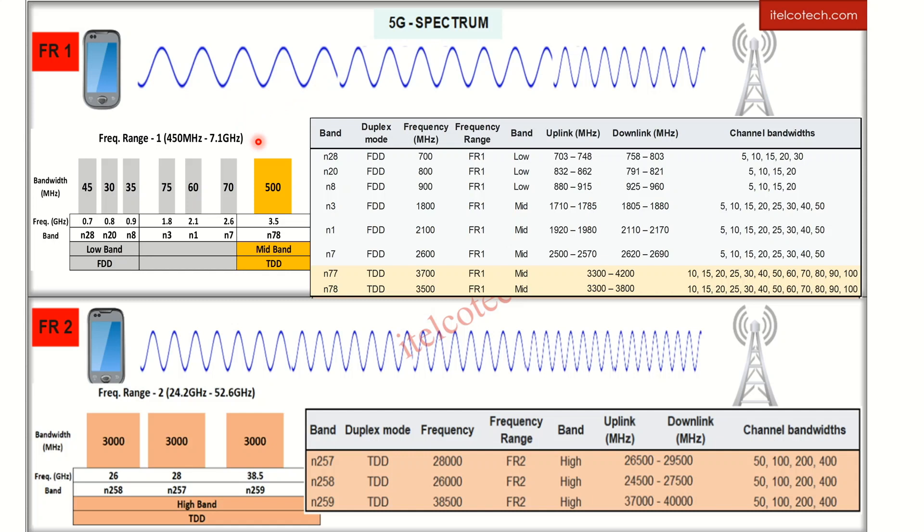Two different ranges are defined in this case: frequency range 1 and frequency range 2. Frequency range 1 caters to less than 7 GHz, so between 450 megahertz to 7 GHz. Whatever frequency band lies between this range is termed as frequency range 1.